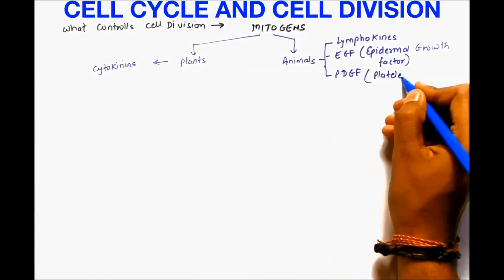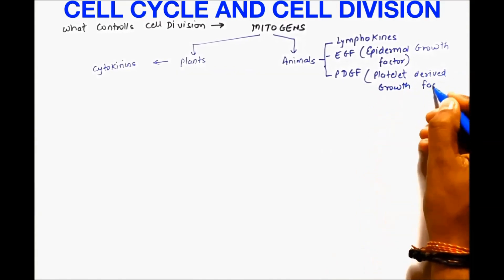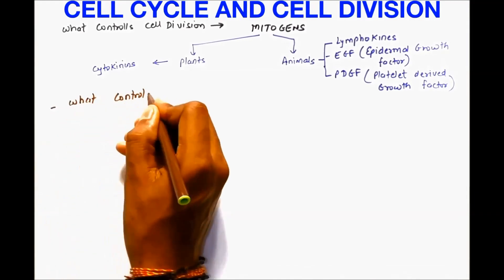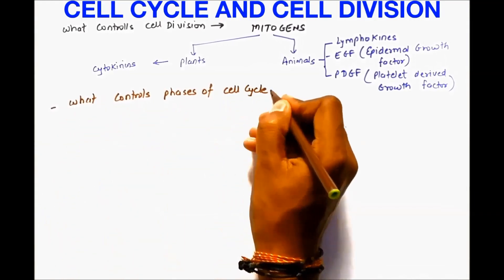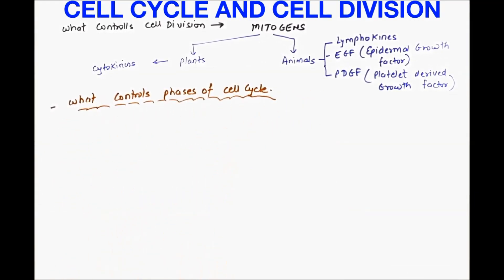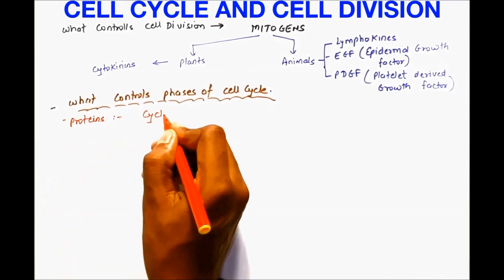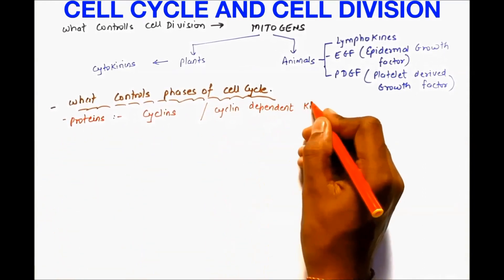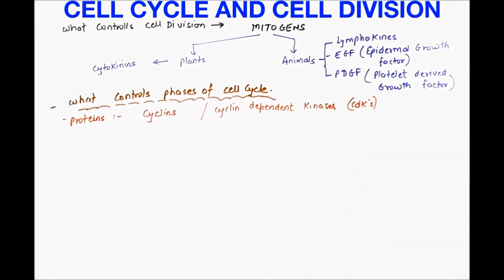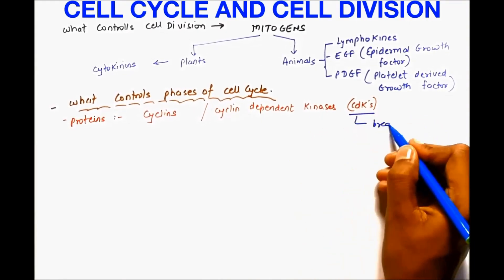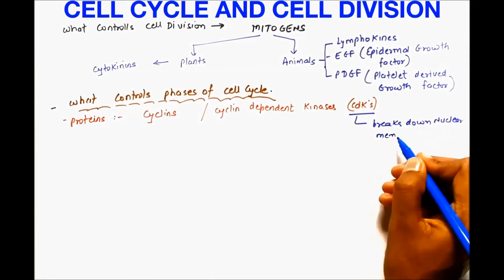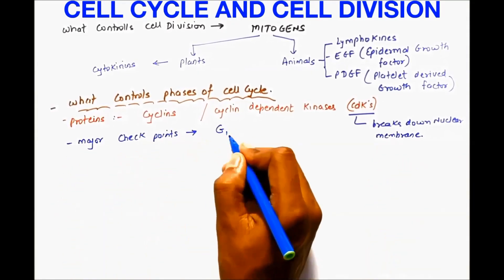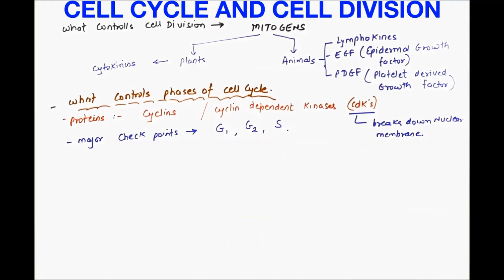In plants the mitogen is cytokinin, and in animals it is lymphokines. EGF (epidermal growth factor) and PDGF (platelet-derived growth factor) are special mitogens. What controls the phases of the cell cycle like G1, G2, and S? There are special proteins called cyclins, also called cyclin-dependent kinases or CDKs. The role of CDKs is to break down the nuclear membrane. The major checkpoints are G1, G2, and S.